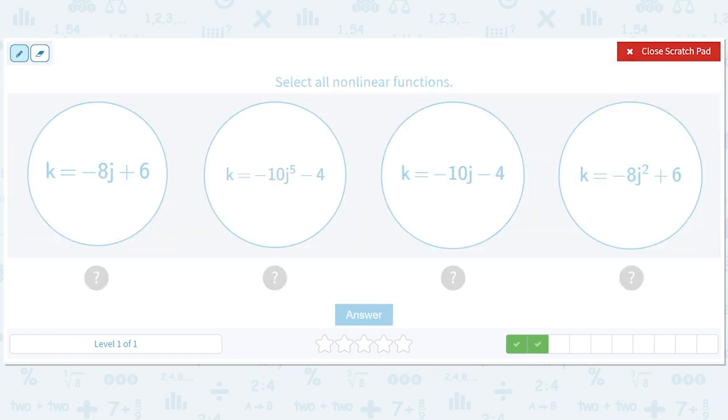Select all nonlinear functions. Okay, well that's got a fifth, that's got a squared. Everything else just has powers of one or no powers at all, right? You don't see them. So you can tell they're linear.